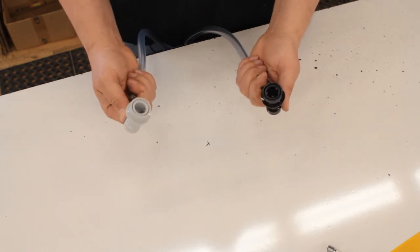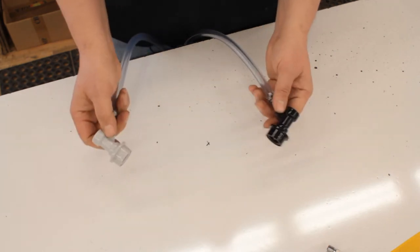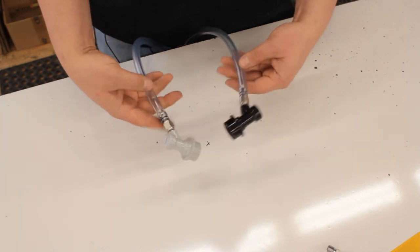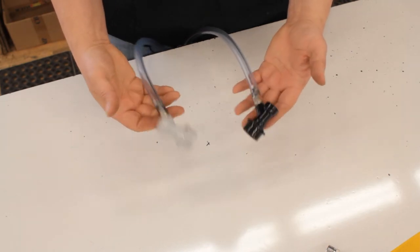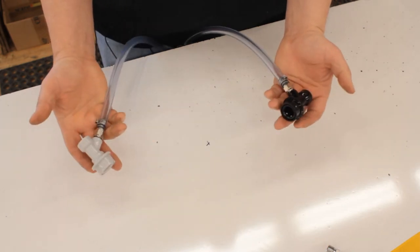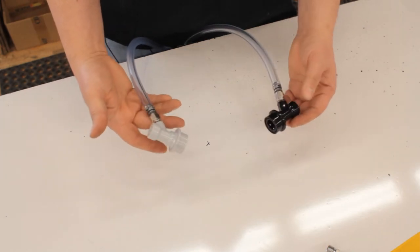Now one thing that's unique about homebrew style connectors is that when these get disconnected off of the keg, there's a poppet valve inside here that keeps the contents in the hoses from spilling out. So it's pretty nice that you can just disconnect this and not have to worry about turning your gas supply off or anything like that.